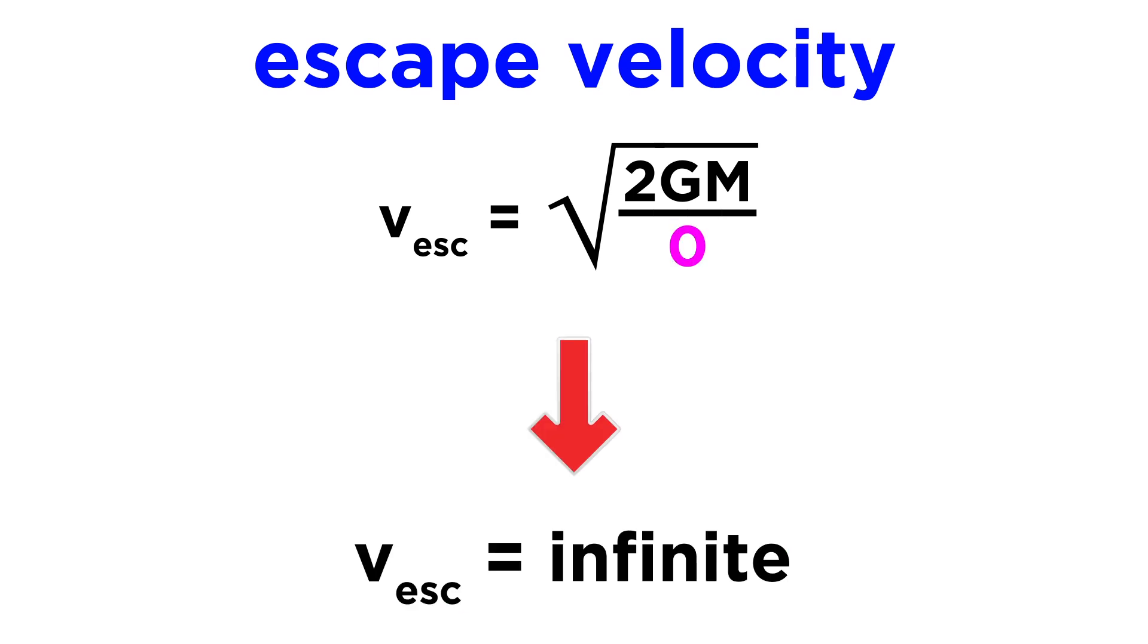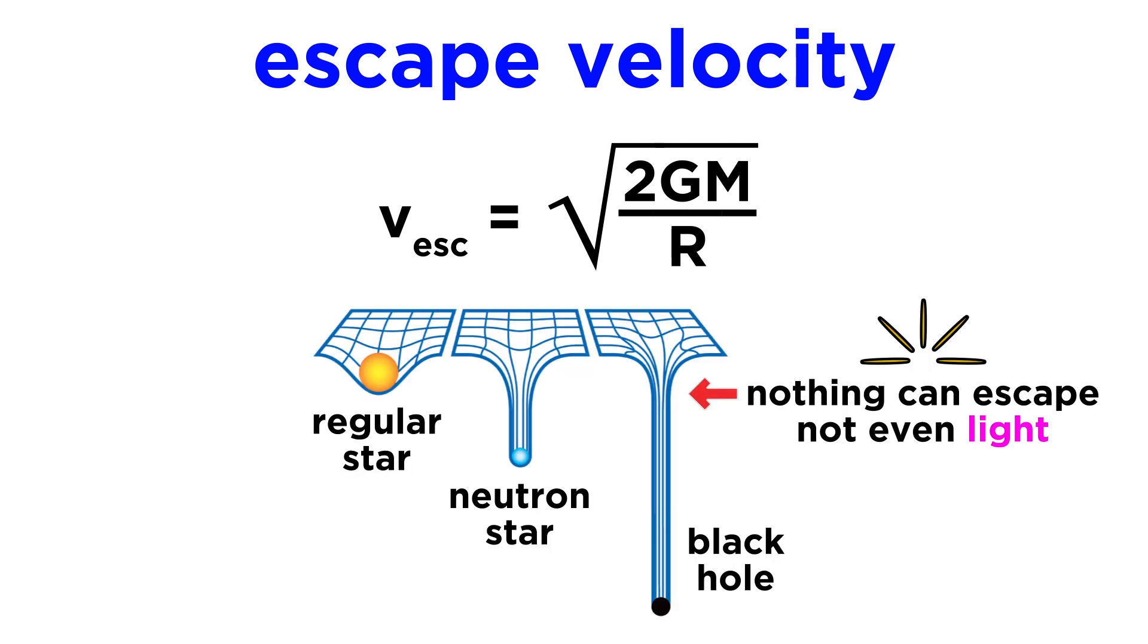In the limit of a massive object with zero radius, the escape velocity becomes infinite, meaning that no object can escape the gravity of a black hole, no matter how fast it travels.